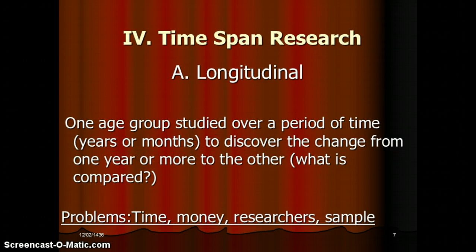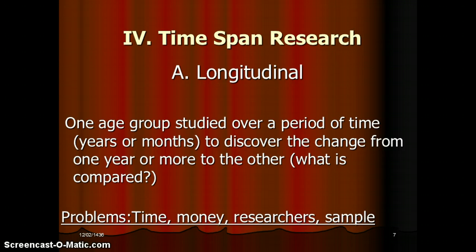The next type of research is time span research. Longitudinal research involves one age group studied over a period of time — years or months — to discover change from one point in time to another. Remember, longitudinal studies one age group over a period of time, not a cross-section of people. Problems with longitudinal research include time, money, and research sample issues.